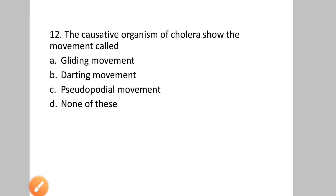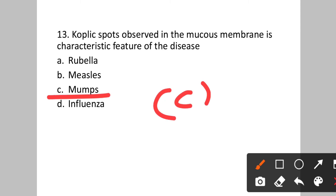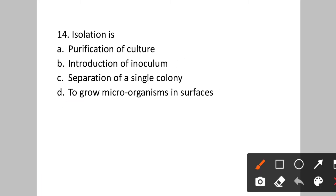Question number thirteen: Koplik spots observed in the mucous membrane is a characteristic feature of which disease? Option A: rubella. B: measles. C: mumps. D: influenza. The answer is mumps — option C will be the correct answer.